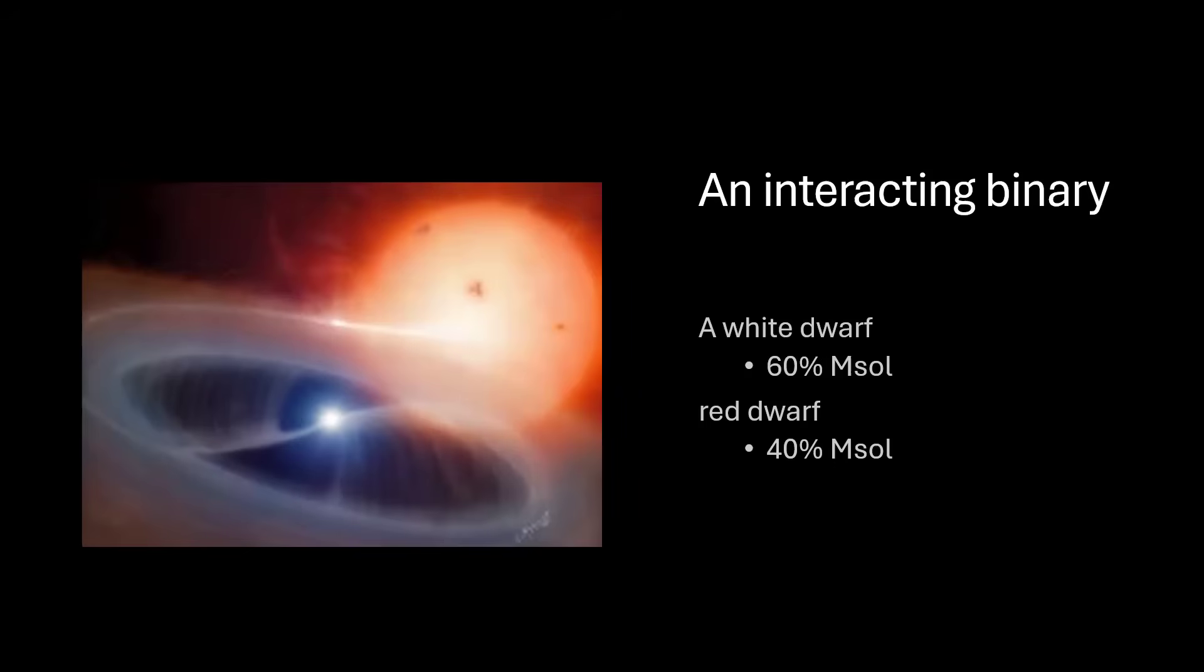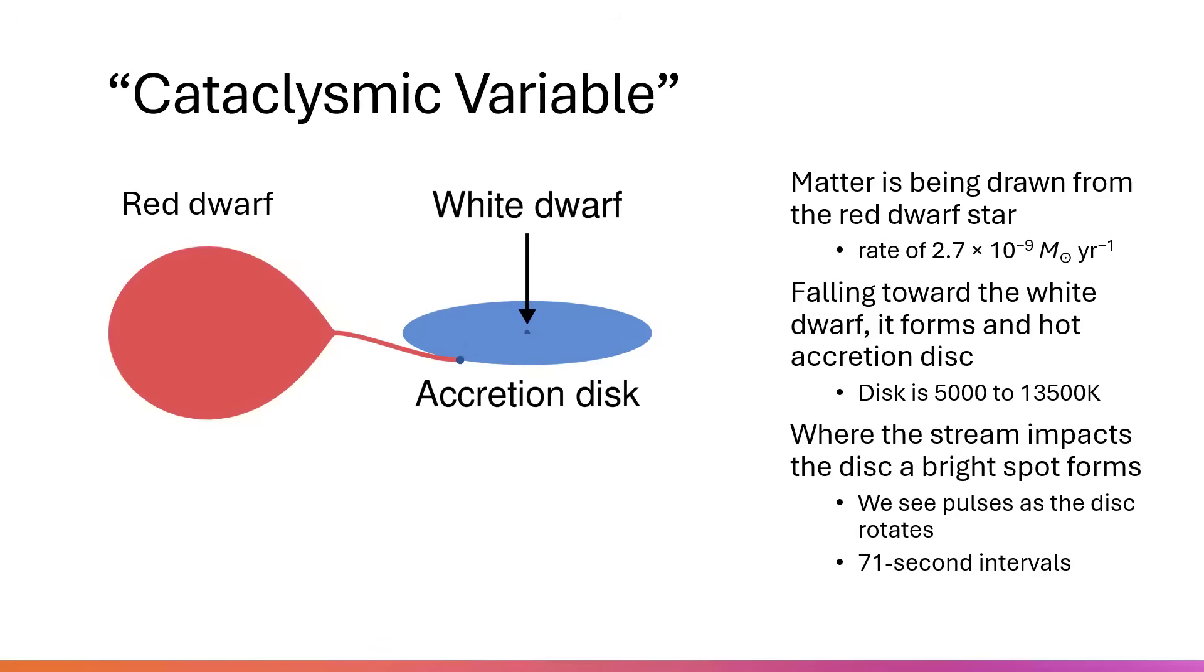And they're so close together, that 4.6 hour long orbit, that they are an interacting binary pair. The material is so close together that really they're almost on the point of merger, and this creates what we call a cataclysmic variable.